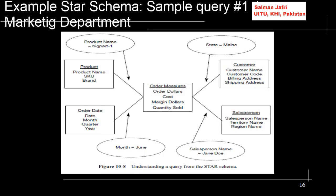Looking at figure 10.8, we can see the processing of this query in more detail. The product dimension would be involved with the query filter big_part_one. The order date dimension would be involved with the attribute month equals June. The sales person dimension with sales person name equals Jane Doe. And the customer dimension with shipping address where state equals Maine. Note that the address might be drilled down to look at the particular state — state, city, zip — that's how the address would be broken down into hierarchical form.